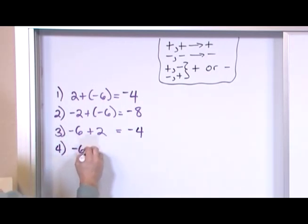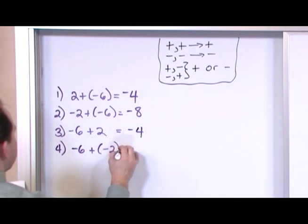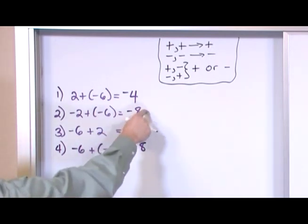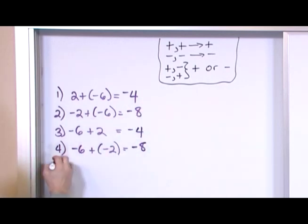Let's say I have negative 6 plus negative 2. Again, same thing. Negative plus negative is always going to give you negative. 6 plus 2 is always going to give me 8, because when they're the same sign like that, I always add them. And again, it gives me the same answer because I just flip the order.